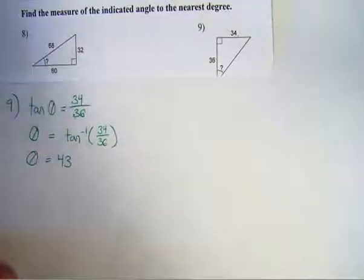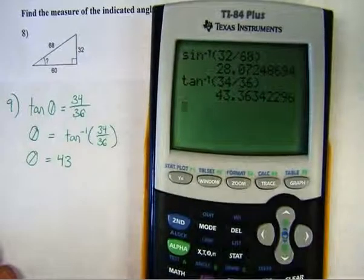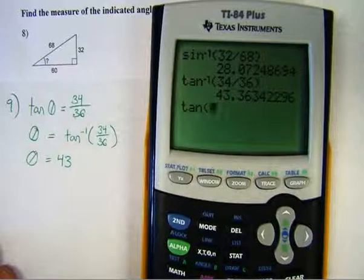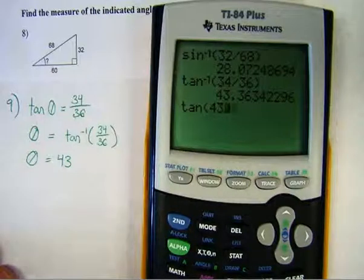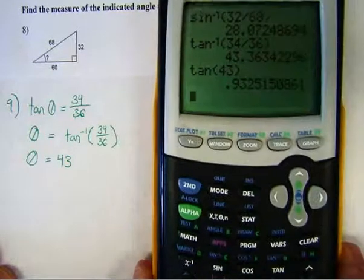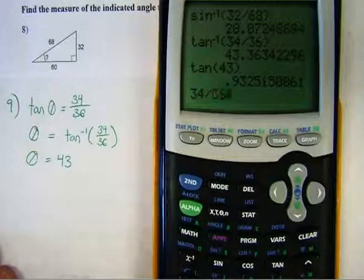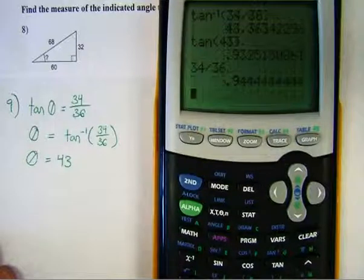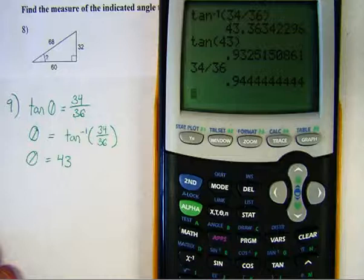And you can actually check this if you'd like by saying the tangent of 43 and figuring out what that is, and then taking 34 divided by 36. And those answers should be very, very close together if you've done this properly.